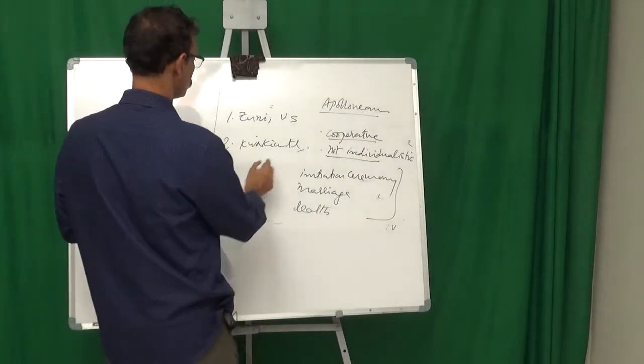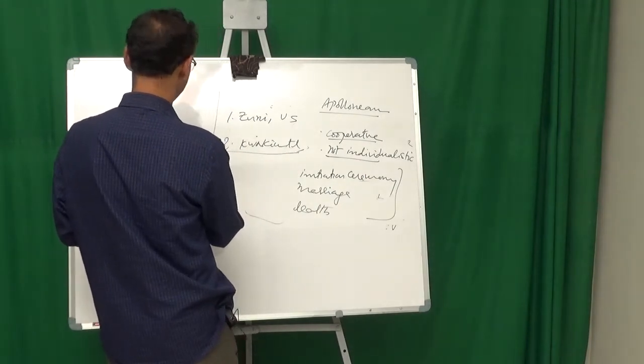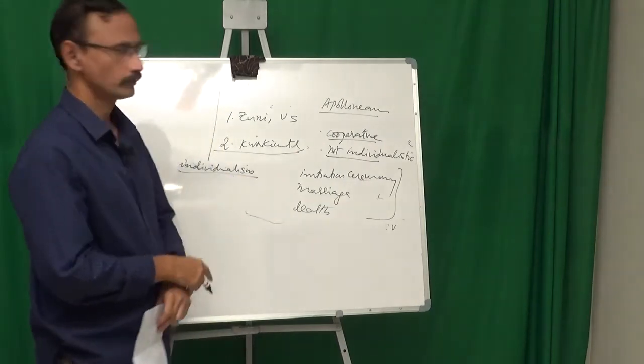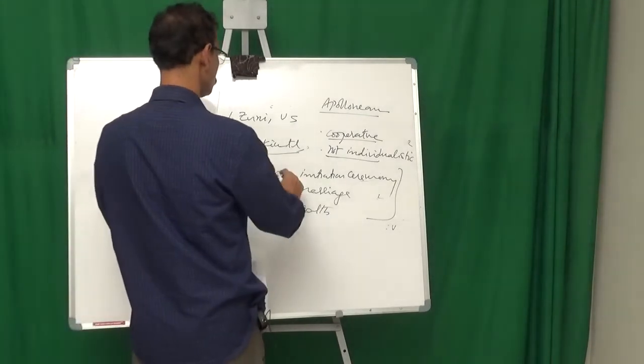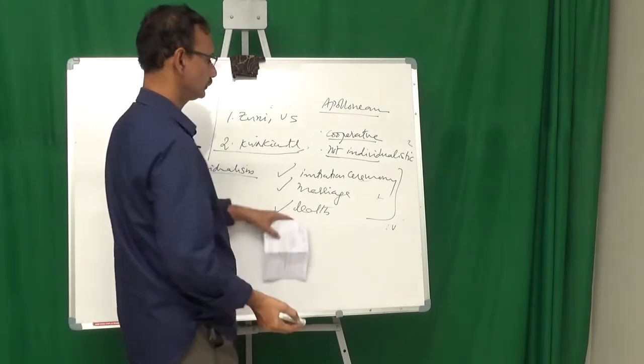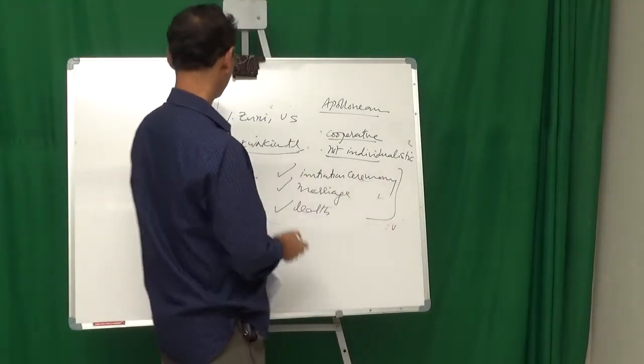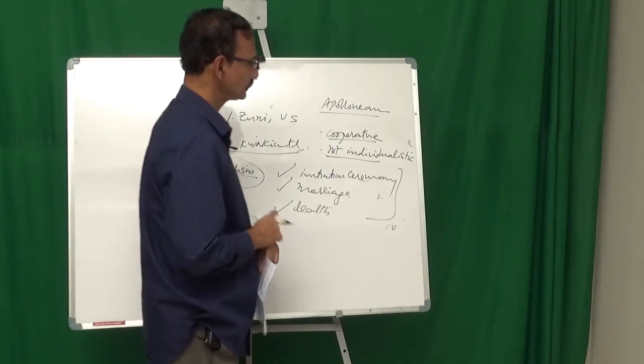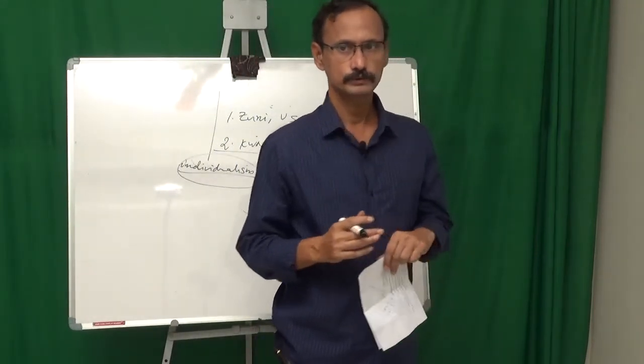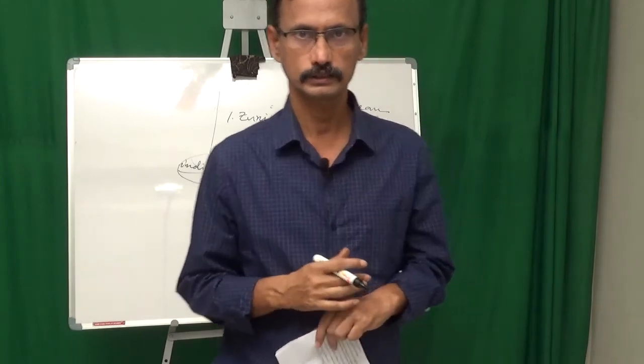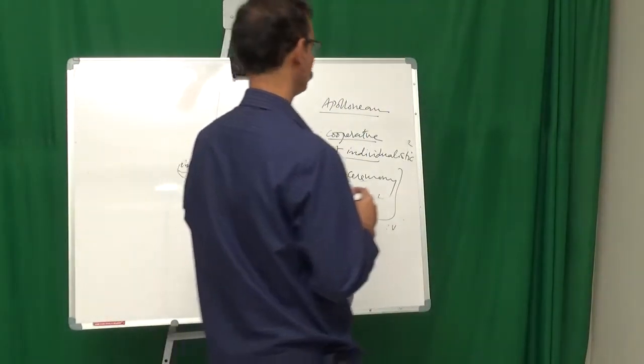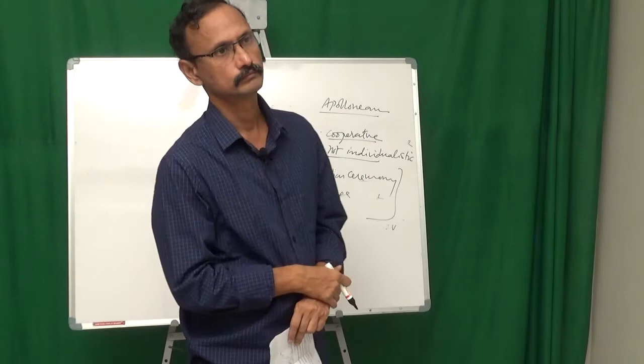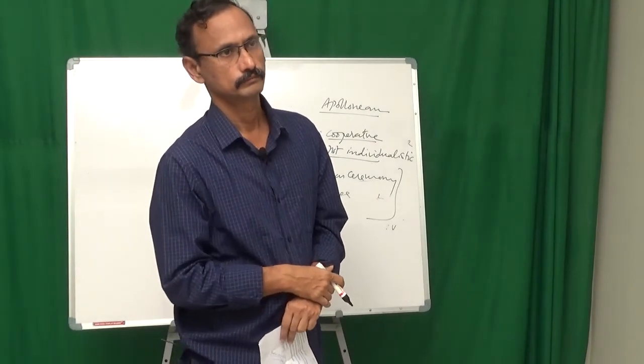Whereas in Quarkite, highly individualism. Individual is given so much importance. So these ceremonies are given so much importance. Death is mourned. Marriage is taken seriously. Initiation ceremony is taken seriously. So what she wants to say is one culture is producing an individualism. Another culture is producing a kind of a cooperative and collective oriented and friendly person.